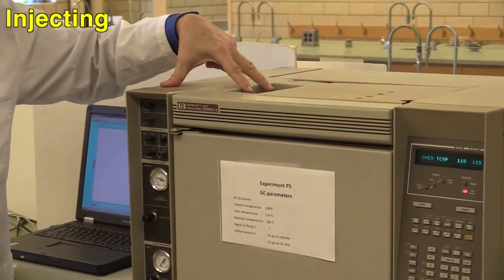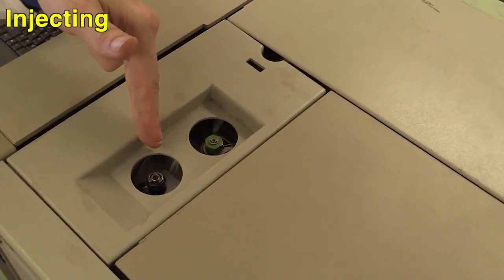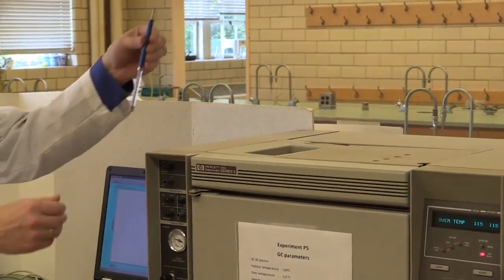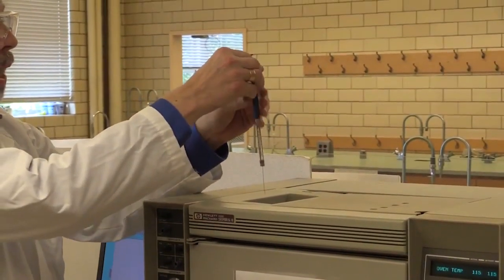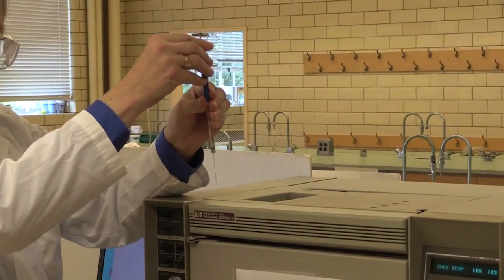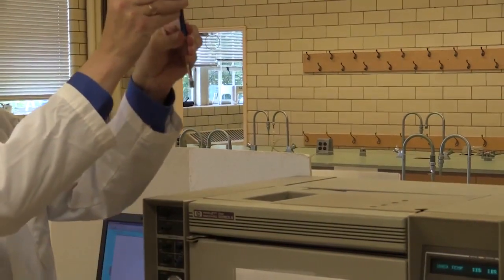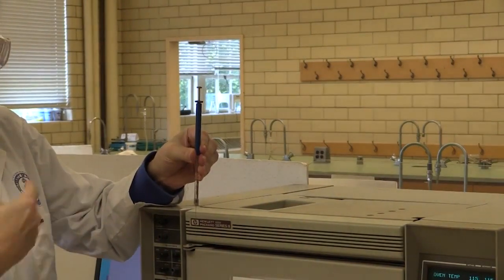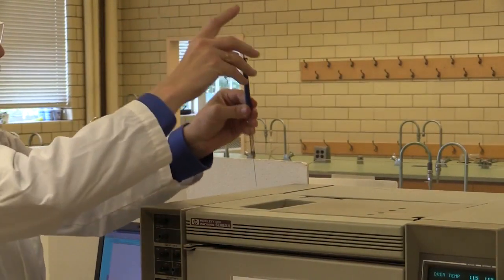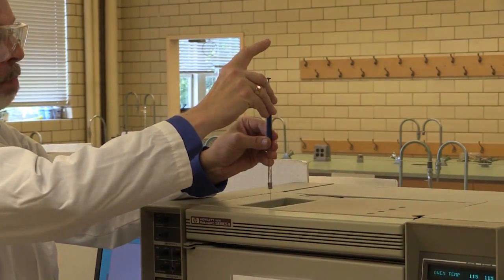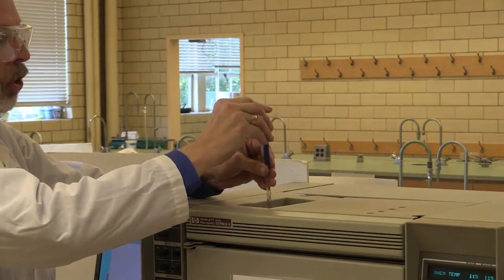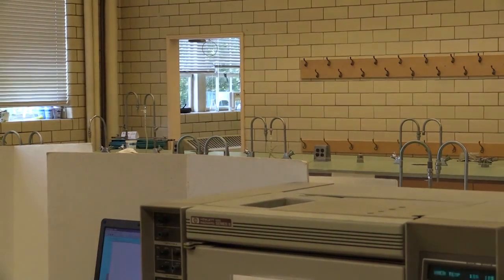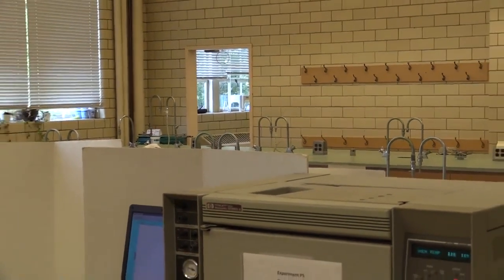There are two injector ports up here. You'll be using the front one. And you take your syringe. And when you inject, you need to do this as smoothly as possible. So it's in, inject, out. Don't push it in and then hold it for a bit and then decide to push. If you do that, you get a really ugly looking injection. So hold it as vertically as possible, push down, inject, out, and hit the space bar as soon as you can. And that will cause the trace to start detecting.